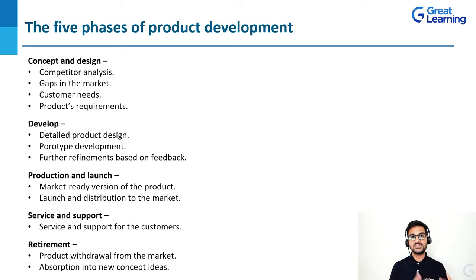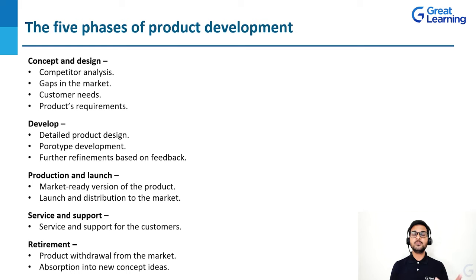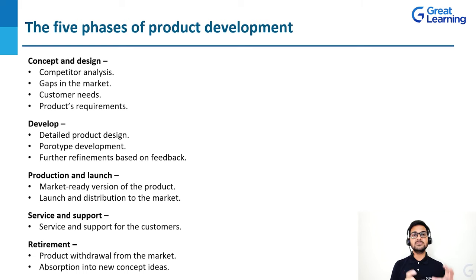Once that is done, we reach the fourth stage, which is service and support. Now the product is sold to customers — we have to provide them service, we have to provide them support, and that is also part of product lifecycle management. Then finally, once customer needs become different, there will be a stage of maturity and saturation when that product will no longer be relevant unless there is some innovation or creativity being applied continuously. Product withdrawal from the market will happen, and absorption into new concept ideas — that becomes part of the fifth stage, which is retirement or the decline stage.